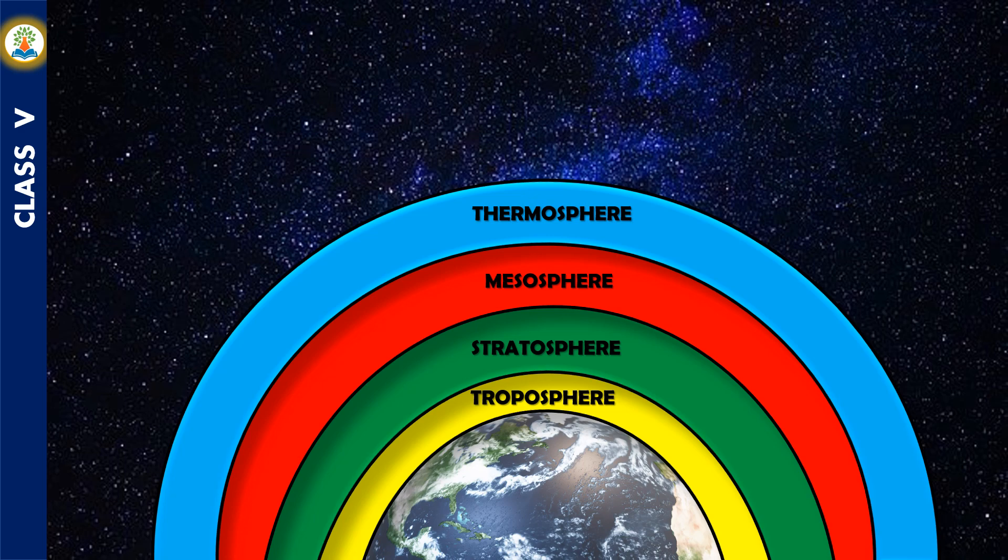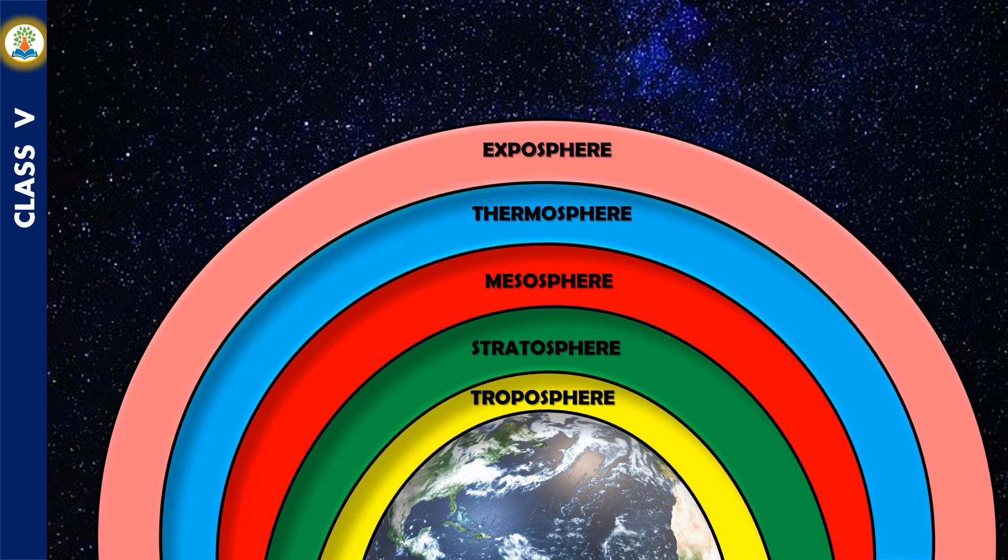Exosphere is the outermost layer of the atmosphere, a zone where molecules and atoms escape into space. It extends from the top of the thermosphere up to 10,000 kilometers.